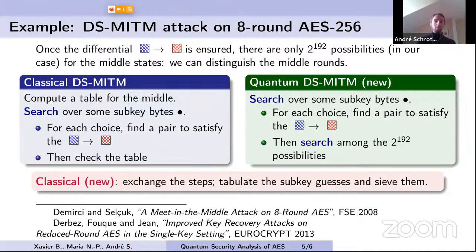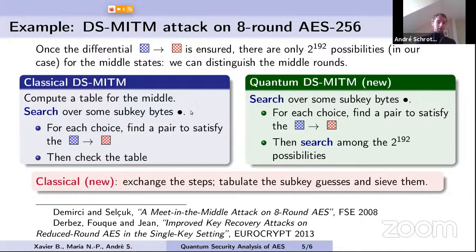It turns out we could still go below exhaustive search complexity with this nested approach. It also gave new ideas for classical attacks: in the classical setting we had a search over sub-key bytes and a table for the middle; in the quantum attack we had a search over key bytes and a search in the middle. This suggested tabulating the sub-key guesses and doing a search for the middle, yielding better time-memory trade-offs on meet-in-the-middle attacks.